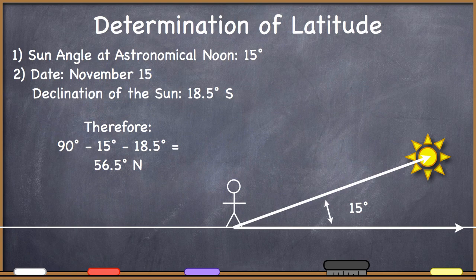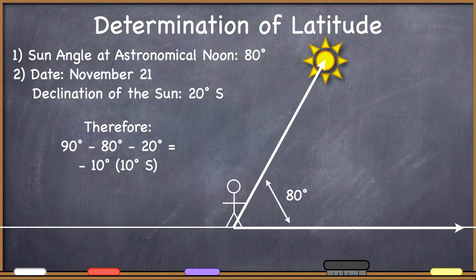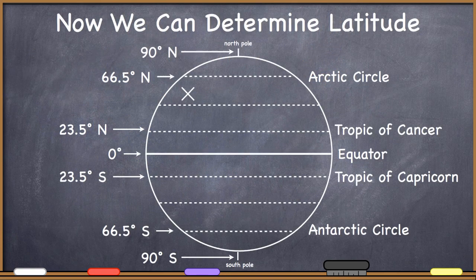The Sun is low in the sky, therefore they're at a higher northern latitude. How about this one? Let's say you go outside on November 21st at astronomical noon and find there is an 80-degree angle between the horizon and the Sun, so your Sun angle is 80 degrees. You look up November 21st and find the declination of the Sun is 20 degrees south. Therefore: 90 minus 80 minus 20 equals negative 10. When you get a negative value for latitude, you're in the southern hemisphere — similar to how you use a negative value for a southern declination. So this person must be standing at 10 degrees south.